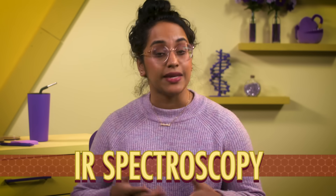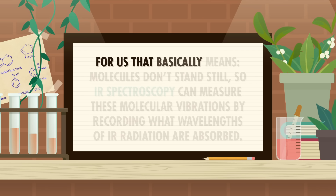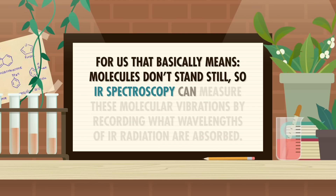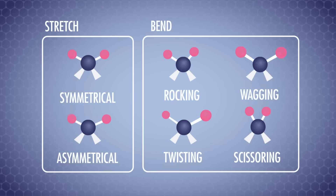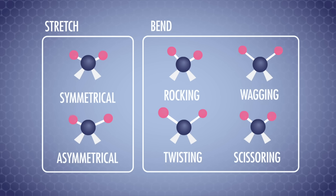Infrared, or IR spectroscopy, is the study of how light in the infrared region of the electromagnetic spectrum interacts with stuff. For us, that basically means molecules don't stand still, so IR spectroscopy can measure these molecular vibrations by recording what wavelengths of IR radiation are absorbed. To think about molecular vibrations, we can think of molecular bonds as springs with atoms attached. Stronger springs take more energy to move around, so molecules with stronger bonds need to absorb light with more energy to keep those vibrations going. A triple bond will absorb light at a higher energy than a single bond. Bonds within molecules can vibrate in different ways — like a stretch, a wag, and a bend. All these dancey-sounding motions need different wavelengths of IR radiation. So basically, IR spectroscopy involves blasting a molecule with IR radiation and seeing what gets absorbed as the molecule's bonds vibrate.